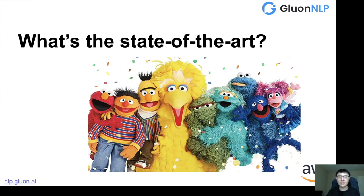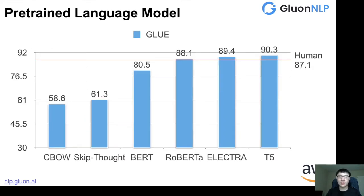So now we know that there are lots of NLP applications. But what is the state of the art for building models? The answer is short: the state of the art is based on pre-trained language models. According to the GLUE benchmark, new models that rely on pre-trained language models can surpass human performance. The leap-frog point started with the BERT model, and later improvements like RoBERTa, ELECTRA, and T5 can surpass human performance on this GLUE task.